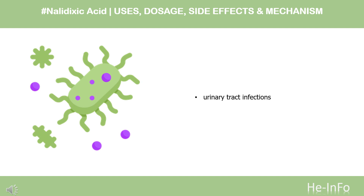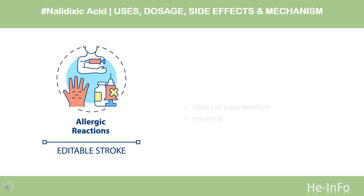Nalidixic acid is used for the treatment of urinary tract infections caused by susceptible gram-negative microorganisms, including the majority of E. coli, Enterobacter species, Klebsiella species, and Proteus species.